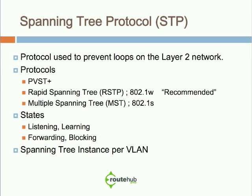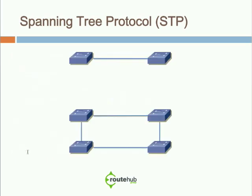One thing to know about spanning tree is that it happens per VLAN. So if you have 10 VLANs, the spanning tree operation happens on each particular VLAN. For example, here we have two switches back to back with no loop involved, just directly connected.